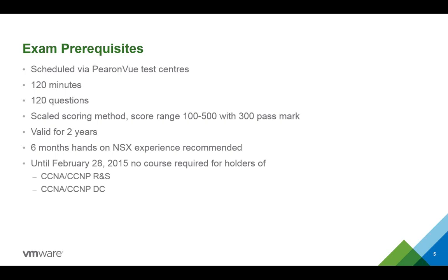This one is really new for VMware. Usually to get a VCP you had to take one of the official training courses — most people took the ICM, the Install Configure Manage. For NSX, right now the qualifying course would only be the ICM. But if you are either a CCNA or CCNP routing and switching, or a CCNA or CCNP data center, you can actually take the VCP exam without any course requirement, which means you can save up to $2,000 or $3,000.